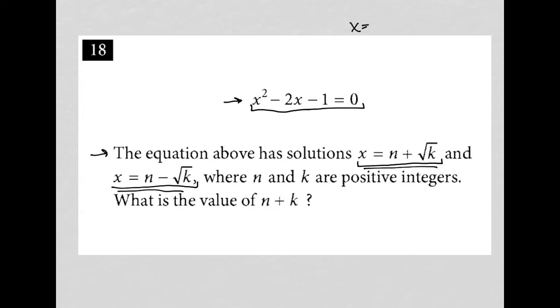which is x equals negative b plus or minus the square root of b squared minus 4ac all over 2a. That's how we get radicals in our solutions to quadratic trinomials.